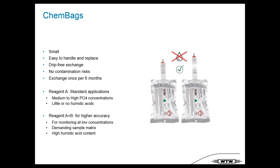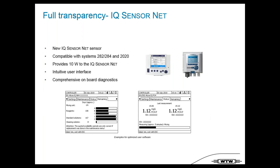ELISA PO4 can also eliminate humic acid interference. On IQSensorNet it is fully transparent — it's like a new sensor compatible with all current IQ systems. New also is that ELISA provides 10 watts back to the IQ sensor network, so in a small system you don't need an additional power supply. We have integrated a completely new user interface with different tabs for settings, maintenance, actual status, and chemical remaining time — very intuitive and simple.